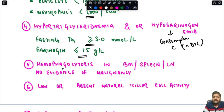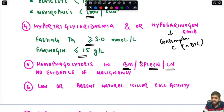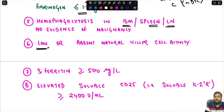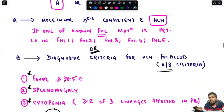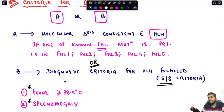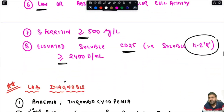The fifth criterion is hemophagocytosis in the bone marrow, spleen, or lymph node — with no evidence of a malignant process (any malignancy rules out MAS/HLH, since it is a reactive condition). The sixth is low or absent natural killer cell activity. The seventh is serum ferritin ≥500 µg/L. The eighth is elevated soluble CD25 (soluble interleukin-2 receptor) ≥2,400 units/mL. At least five out of these eight criteria must be fulfilled for diagnosis.